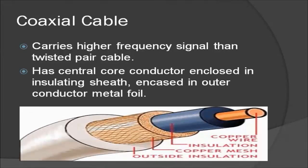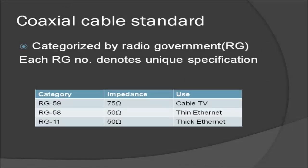Now comes the coaxial cable. This coaxial cable carries signals of higher frequency ranges than those in the twisted pair cable. Here we have a central core conductor of solid wire which is enclosed in an insulating sheet, which is in turn encased in an outer conductor of metallic foil, and the whole assembly is covered by a plastic insulator.